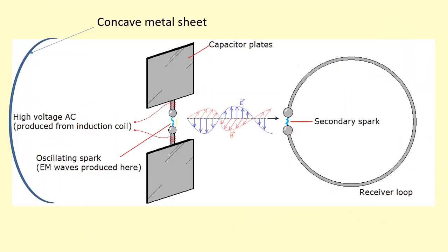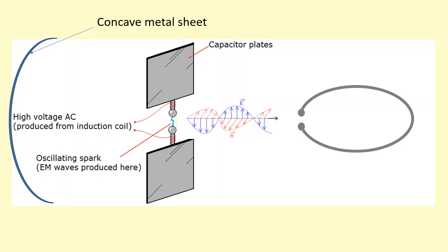The second experiment he did was to rotate the receiver loop along this axis here. So as he rotated it, he noticed that the sparks produced decrease. This is because there's less magnetic field going through the loop at right angles. So if you remember, magnetic flux has to be going at right angles. It's only the component that's going at right angles to the loop that counts. So that magnetic field component that's going at right angles decreases.